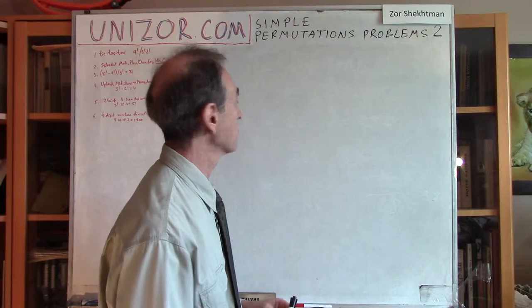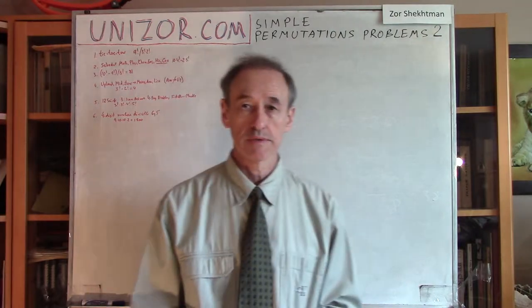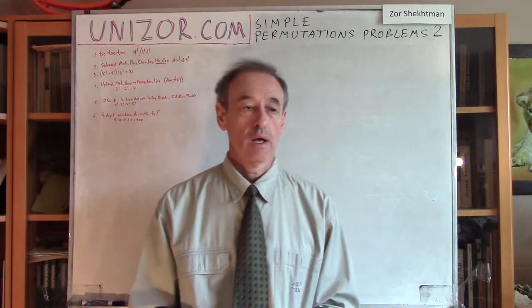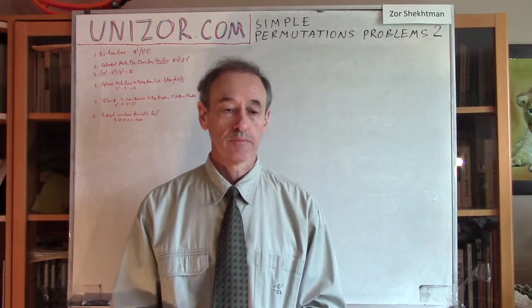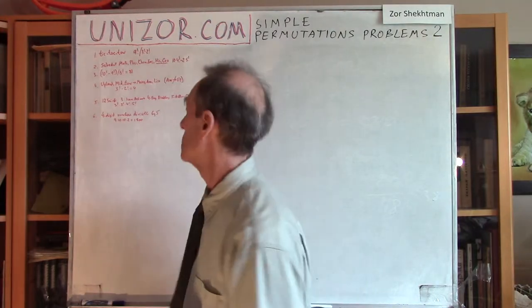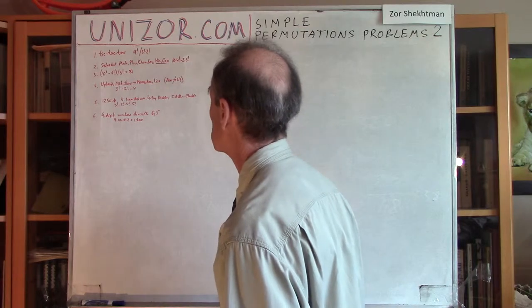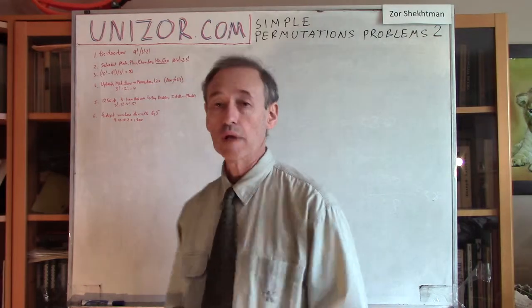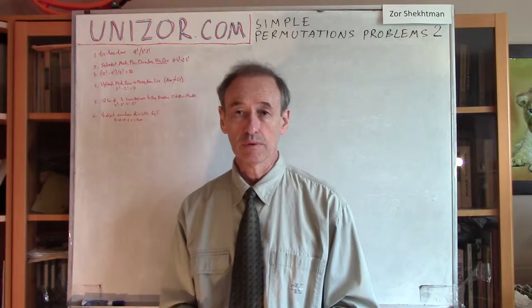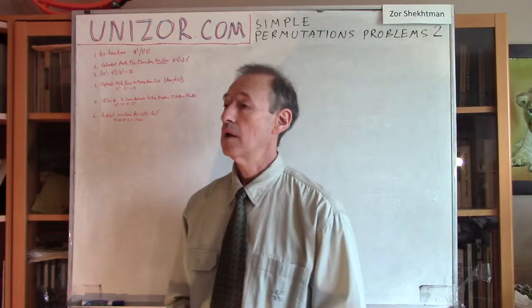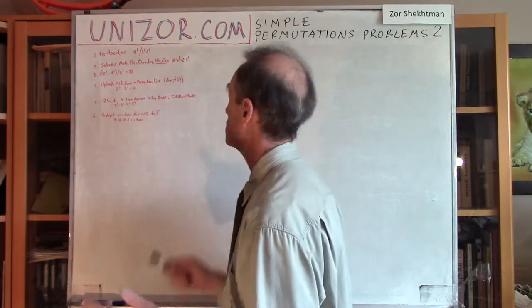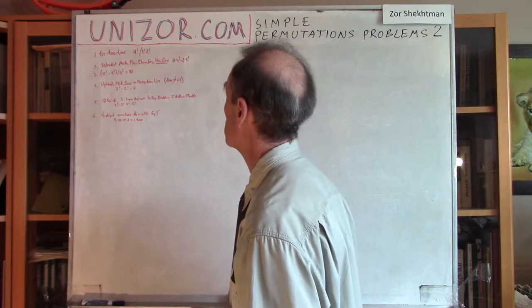Back to permutation problems. There are six problems. They are all relatively simple. Let me just start them one by one.